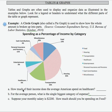The first question: how much of their income does the average American spend on health care? Looking for the health care category on the chart, that is 6%.